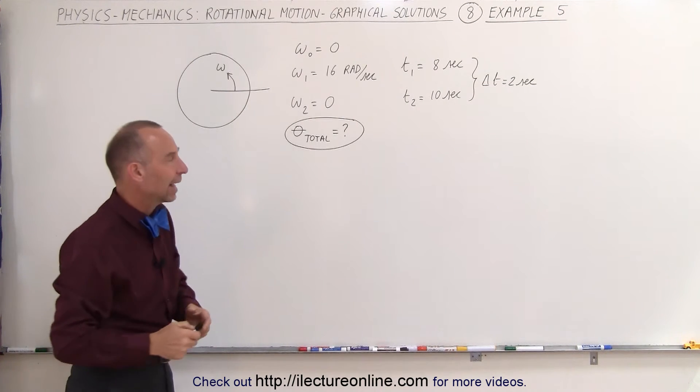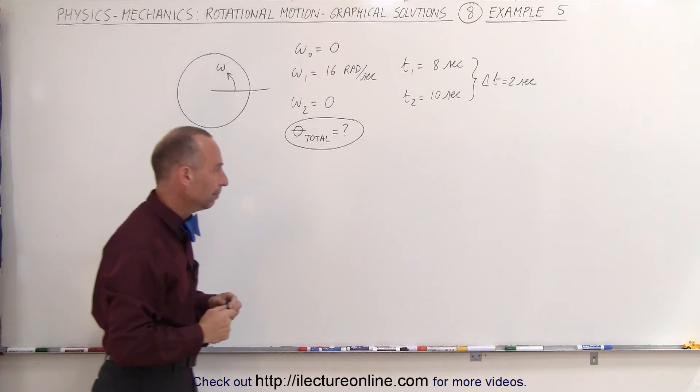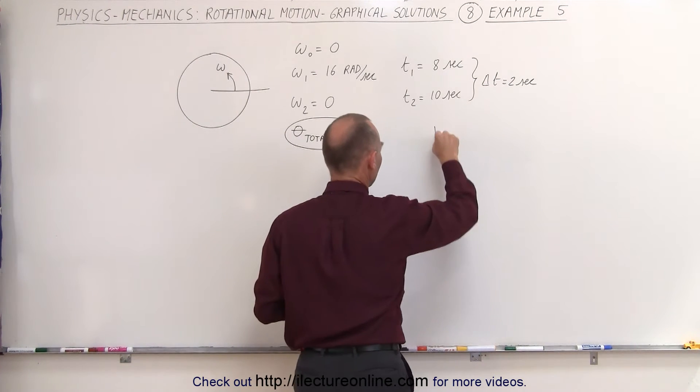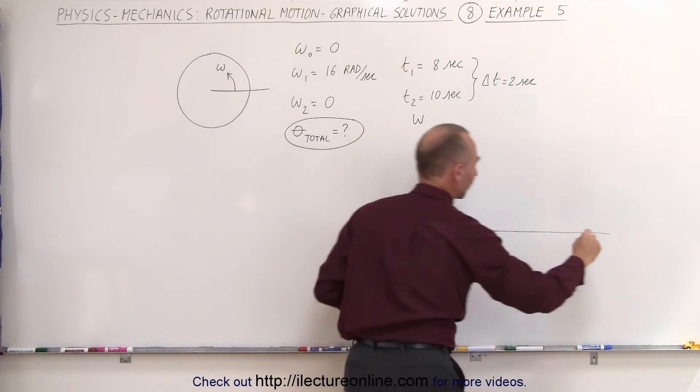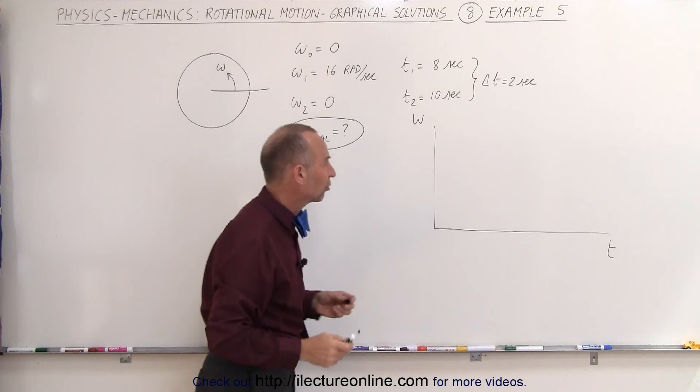So let's make a graph of that and try to solve it graphically. We'll start with an omega versus time graph. You can see that this is in two sections.